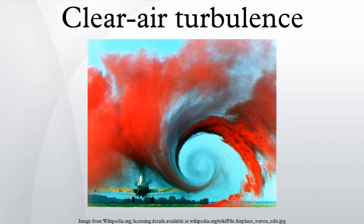A jet stream alone will rarely be the cause of CAT, although there is horizontal wind shear at its edges and within it, caused by the different relative air speeds of the stream and the surrounding air. Rossby waves caused by this jet stream shear and the Coriolis force cause it to meander.